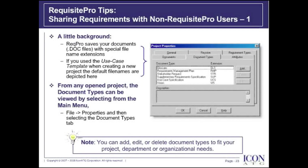Before we discuss sharing requirements with non-Requisite Pro users, I'd like to provide background on how Requisite Pro works. When Req Pro saves your Word document files, it saves those files with extensions other than .doc. If you used the use case template, the default document types are: Glossary (.GLS), Requirements Management Plan (.RMP), Stakeholder Requests (.STR), Supplemental Requirements Specification (.SUP), and Use Case Specification (.UCS).